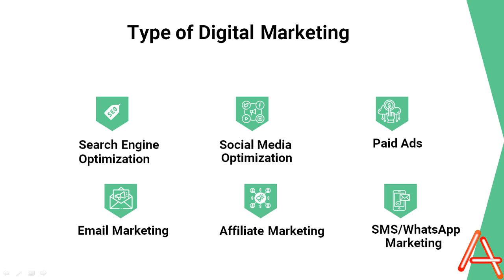The fourth type of digital marketing is email marketing. Email marketing involves sending promotional emails to your subscribers to promote your products or services — it's an effective way to reach your target audience. The fifth type of digital marketing is affiliate marketing, which involves partnering with other businesses to promote each other's products or services. Affiliate marketing can help you reach a wider audience and generate more sales.